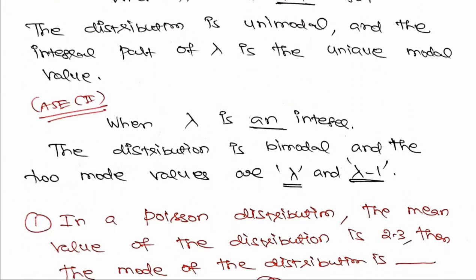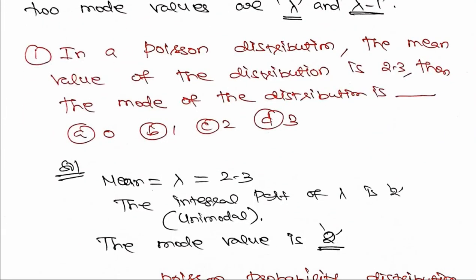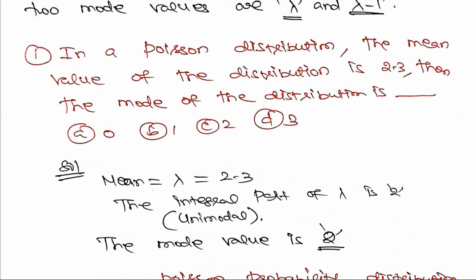Suppose λ is an integer, then both λ and the preceding value λ-1 are modal values. In a Poisson distribution where the mean value is 2.3, the mode is the integral part of 2.3, which is 2.